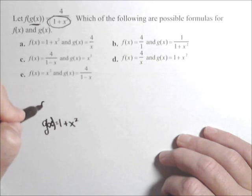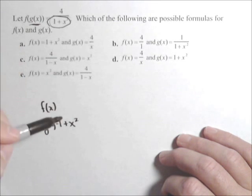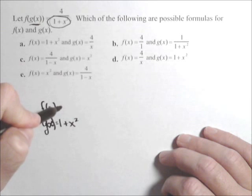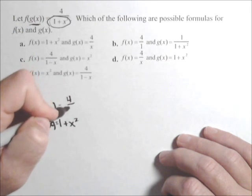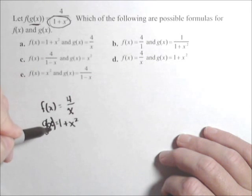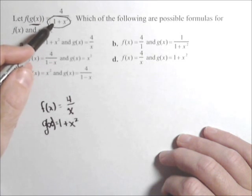So what that would leave for f of x, well, what f of x does is it takes g of x and puts four over it. So f of x would be four over x. Composing those together would give me four over one plus x squared.